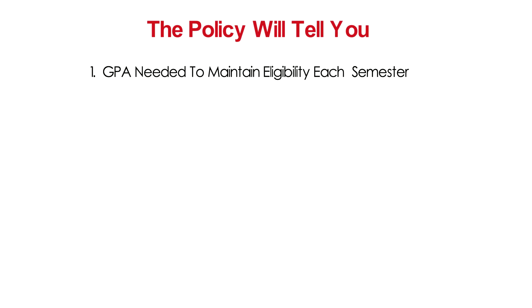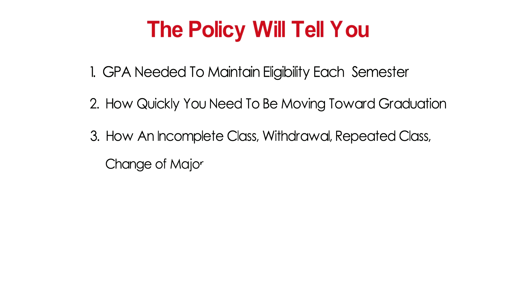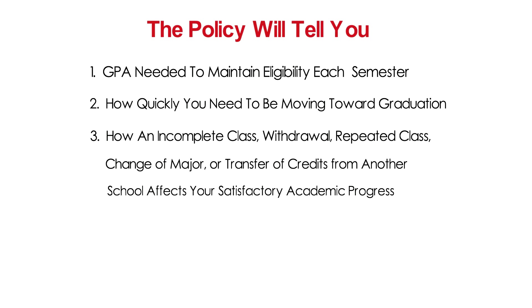The policy will tell you what grade point average you need to maintain your eligibility each semester, how quickly you need to be moving toward graduation — for instance, how many credits you should have successfully completed by the end of each term — and how an incomplete class, withdrawal, repeated class, change of major, or transfer of credits from another school affects your satisfactory academic progress.